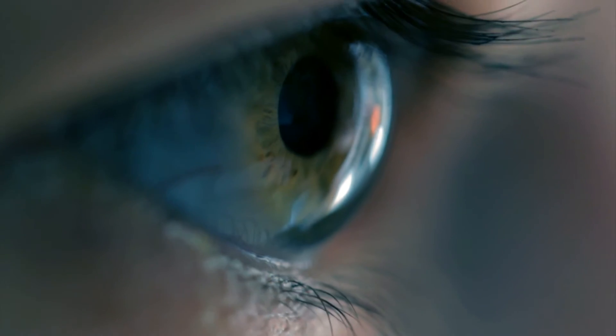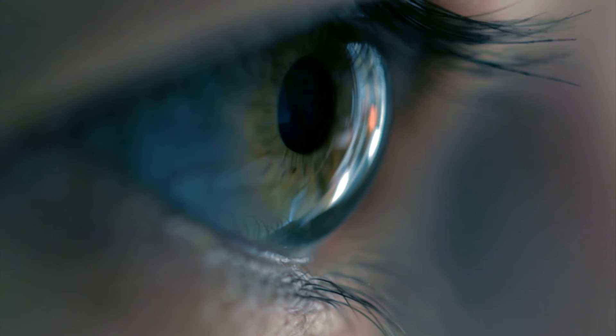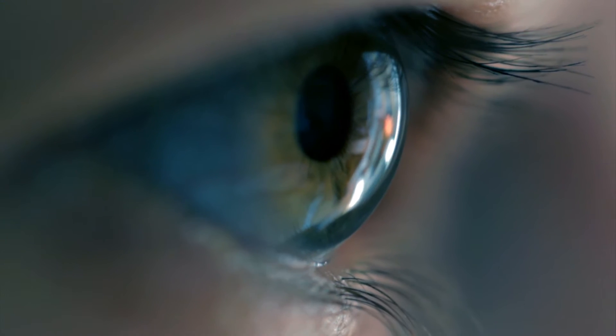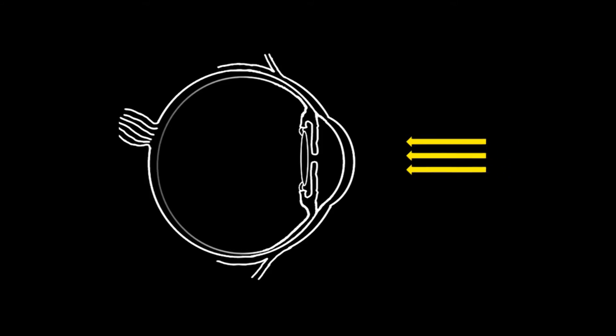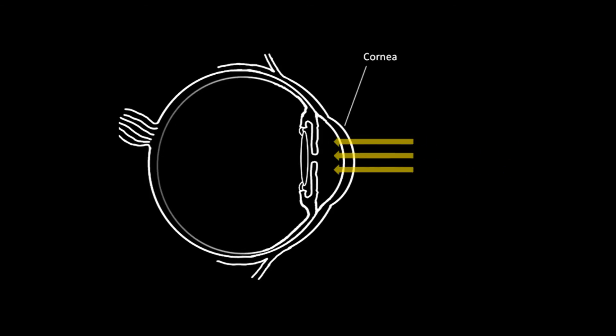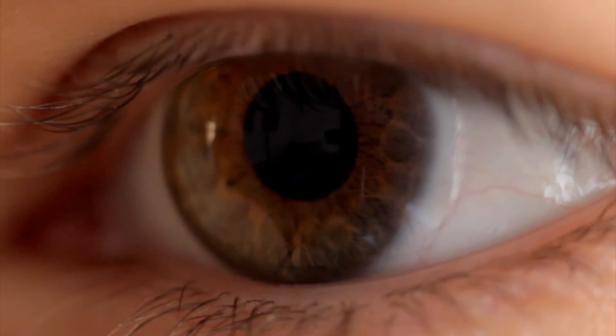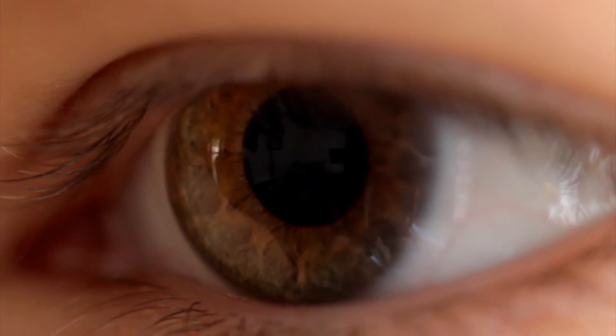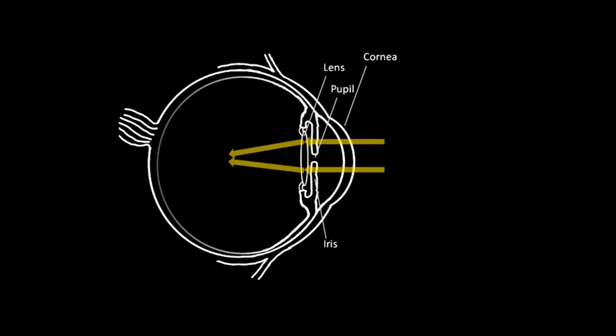Light enters into the eye by passing through the transparent cornea, the extracellular matrix. Then through the pupil, whose diameter is variable and controlled by the iris depending on the strength of the light. Then it enters into the crystalline lens, which focuses the light onto the retina.